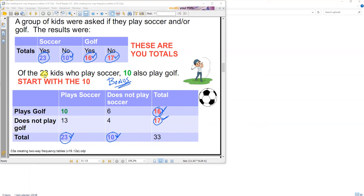And in this case, of the 23 kids who play soccer, of these 23 kids right here, 10 of them also play golf. So plays soccer, plays golf, 10 people play soccer and play golf. So I fill in my table with this information. And then I put in my bonus information.